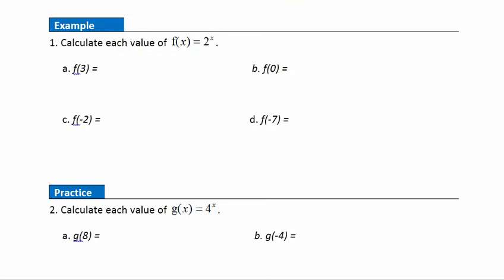Let's look at examples of evaluating an exponential function. Calculate each value of f(x) = 2^x. First, f(3) = 2^3 = 2 × 2 × 2. Be careful not to add — 2 × 2 is 4, times 2 again is 8.